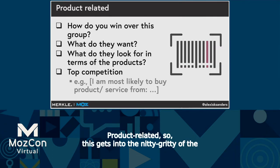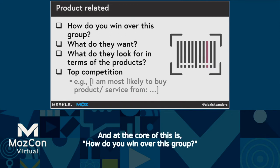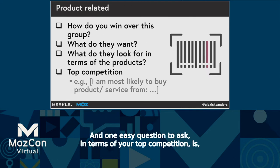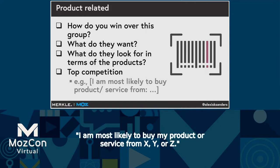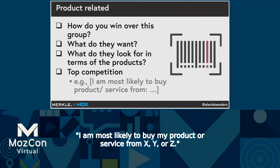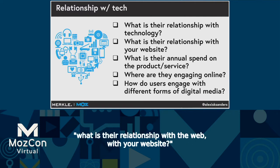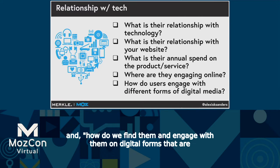Product-related gets into the nitty-gritty of the information you're going to want to look for. At the core is: how do you win over this group? What do they really want from that product? What do they look for in the product? One easy question to ask in terms of your top competition is: 'I am most likely to buy my product or service from X, Y, or Z.' And finally, what is their relationship with technology? With the web, with your website? What is their annual spend? Where are they engaging online already? And how do we find and engage with them on digital forms that are meaningful to them?